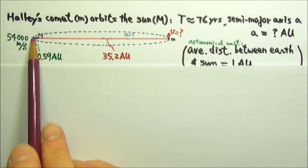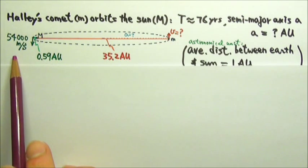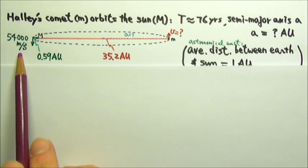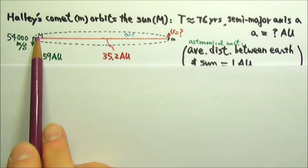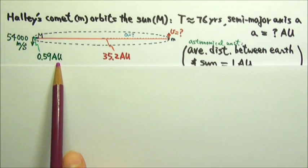At its closest point to the Sun, the Halley's Comet has an orbit speed of 54,000 m per second, and it is 0.59 AU from the Sun.